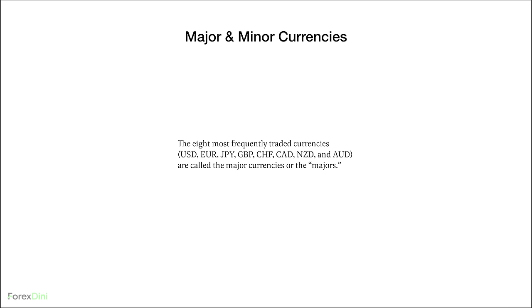Major and Minor Currencies: The eight most frequently traded currencies — USD, Euro, Yen, Pound, Swiss Franc, Canadian Dollar, New Zealand Dollar, and Australian Dollar — are all called the major currencies or the majors. All other currencies are referred to as minor currencies.